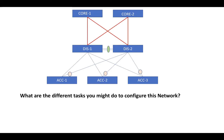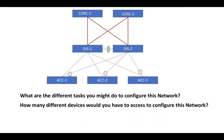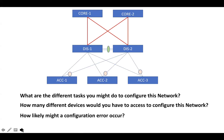Let me ask another question: how many devices do we have to access to configure this network? As per the topology, we have three access layer devices, two distribution layer devices, and two core layer devices — overall, seven devices. As multiple devices are involved in configuration, the chances of making a human error are more, which may lead us to spend a lot of time troubleshooting.